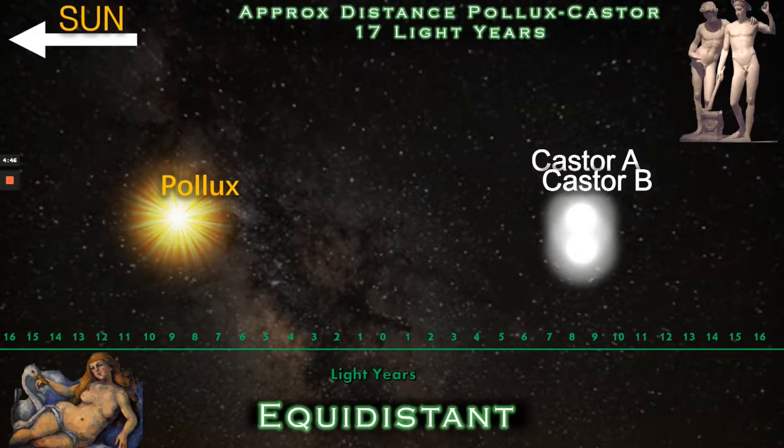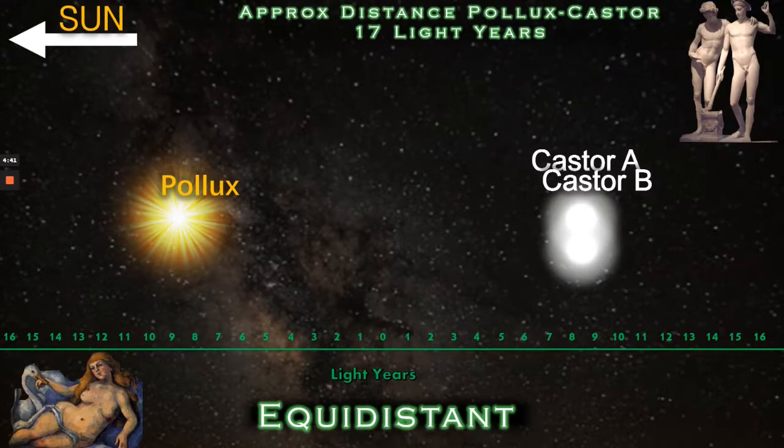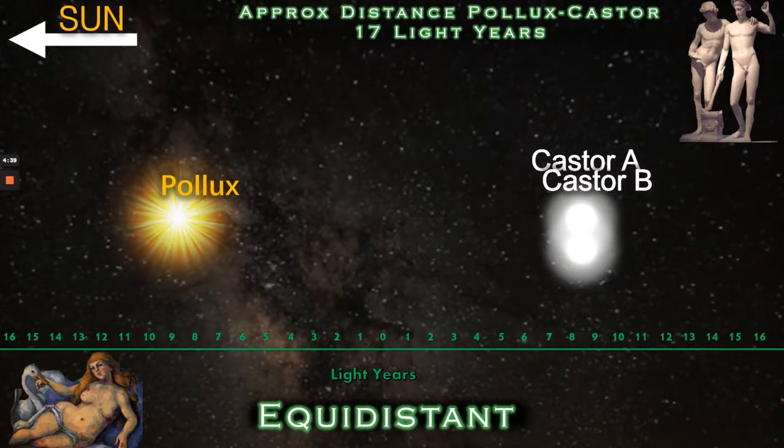The approximate distance from Pollux to Castor is around 17 light years so we will imagine a planet in the middle of these two equally distant at around 8 and a half light years distance to each. What might we see and which would be the brighter of the stars? Let's find out.